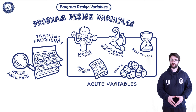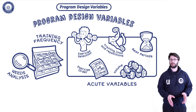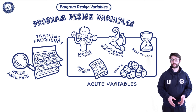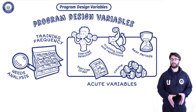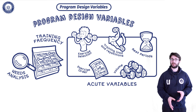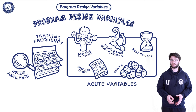Beyond a needs analysis, our organization of program variables is dictated largely by training frequency. This can be thought of in one of two ways: either the number of sessions per week or the number of times you train body parts per week. Training frequency is dictated first by the number of times your client can make it to the gym per week, which is the single most important factor when designing programs.